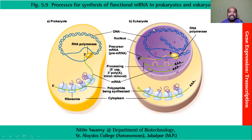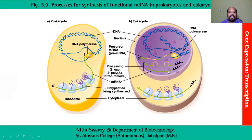In the eukaryotic cell, this is the nucleus, and once the process ends we have pre-mRNA. This is not the one used for protein production. The pre-mRNA undergoes processing: 5' capping, 3' polyadenylation, and removal of introns. Then it becomes mature mRNA, which goes into the cytoplasm and starts the reaction of protein making.